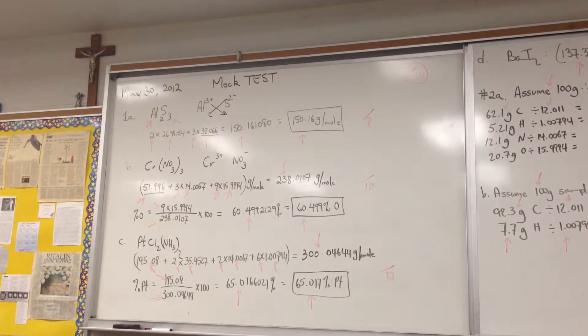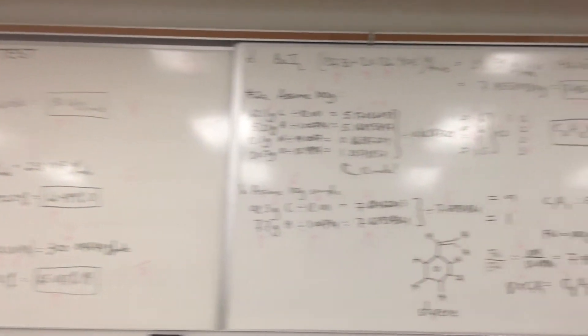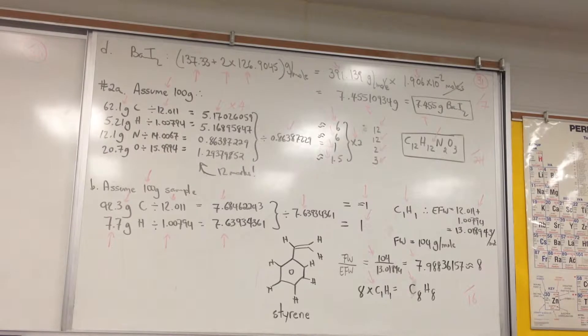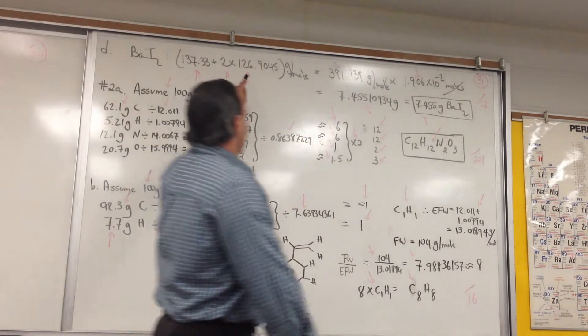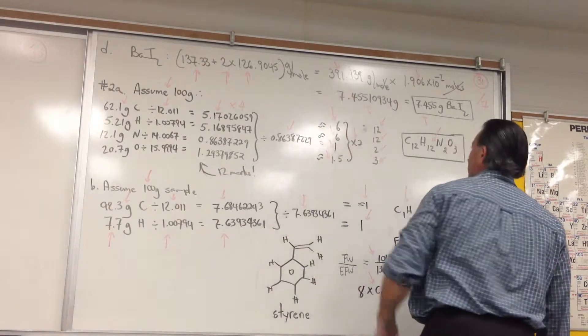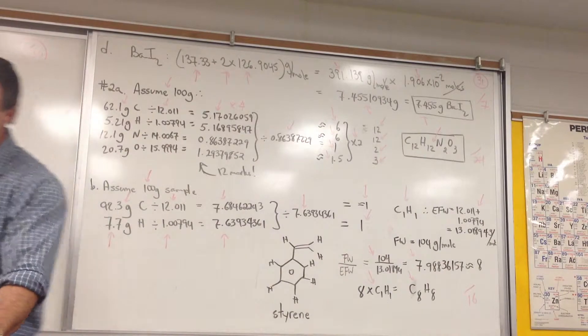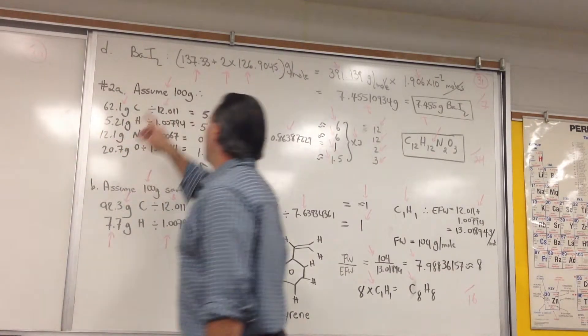In question D, we're asked to find how many grams of barium iodide are found in 1.906 times 10 to the minus 2 moles of barium iodide. So, we first find the molar mass of barium iodide, which is listed here. It's 391 grams per mole. Remember to put a 2 next to iodide. I think I gave the formula in the question as well.